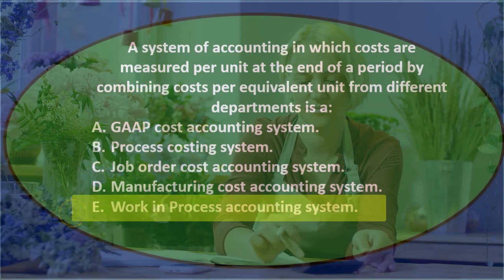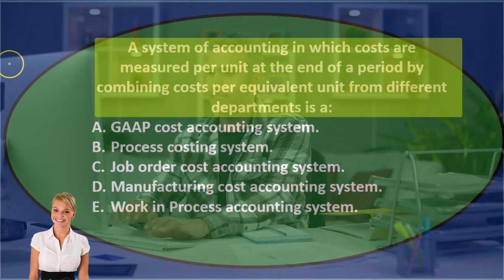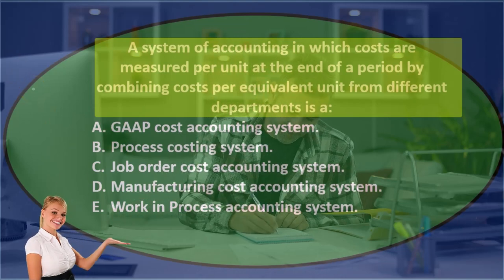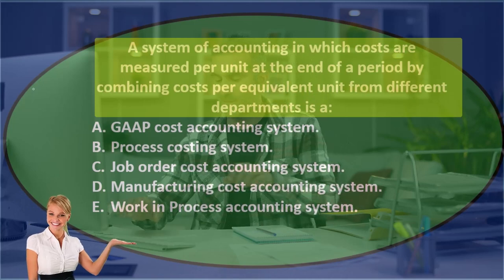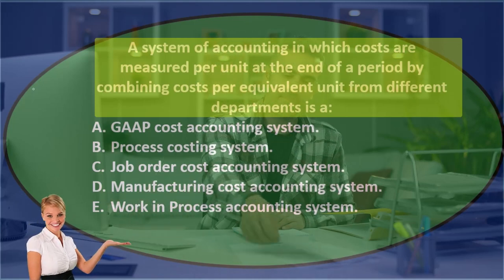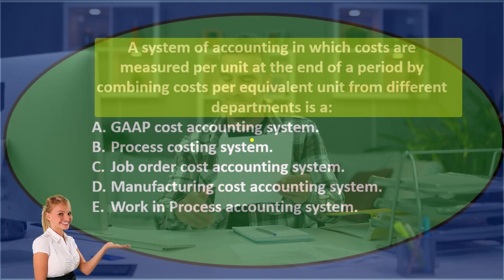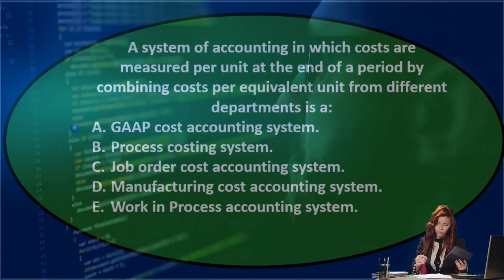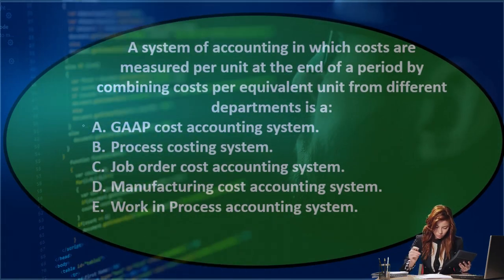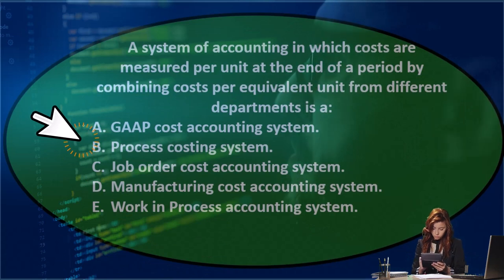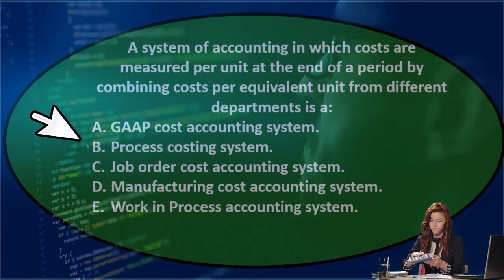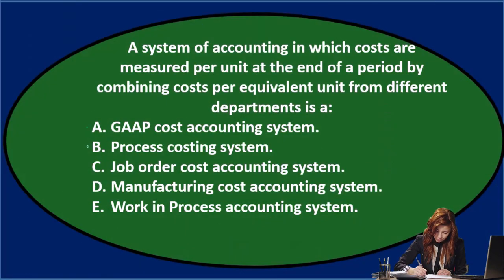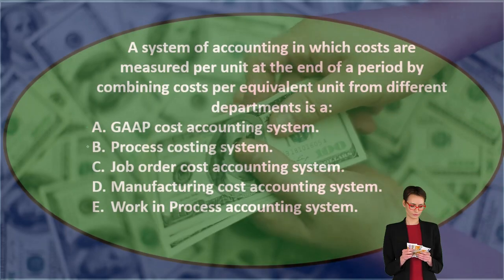Let's use the process of elimination to narrow this down. A system of accounting in which costs are measured per unit at the end of a period by combining costs per equivalent unit from different departments — option A, a GAAP cost accounting system, may well be right, so we might say 'maybe.' Option B, a process costing system — since we're concentrated on process costing, that seems like a strong candidate.